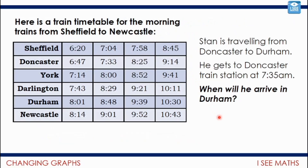Here's recap number two. We've got a train timetable for the morning trains from Sheffield to Newcastle. For example, the first train leaves Sheffield at 6.20, stops at all the stations, and arrives at Newcastle at 8.14. Then train two, three, four, and so on — the fourth train arrives in Newcastle at 9.41. Here's a question: Stan is travelling from Doncaster to Durham. He gets to Doncaster train station at 7.35 a.m. When will he arrive in Durham? Pause the video and have a go.